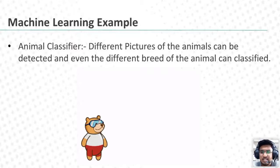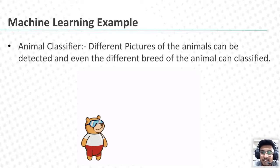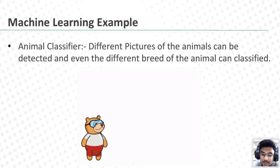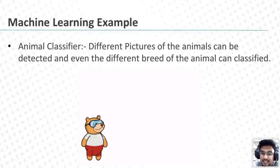We can make machine learning models in different ways. It's not necessary to make only a dog and cat classifier — you can make different things. If you want to make a dog breeds classifier, you can do that too. You can give different images of different breeds — like Labrador or German Shepherd — and based on the given image, it will give you the output of which breed it is. Isn't that amazing? In machine learning, we can perform multiple things — the more you explore, you will learn a lot.